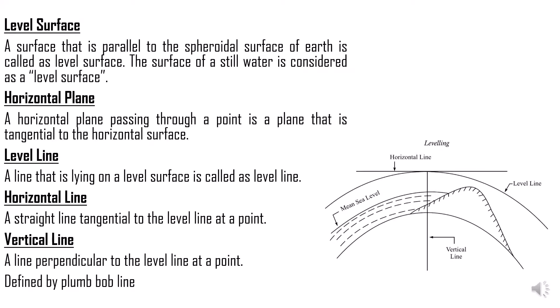What is a level line? A level line is a line that is lying on the level surface, as shown in the right-hand side figure. A line that is tangential to the level line is what we call a horizontal line. One important property of the level line is that when you consider any point on the level line, all points will be perpendicular to the plumb bob — the plumb bob takes the direction of gravity, perpendicular to the level line.